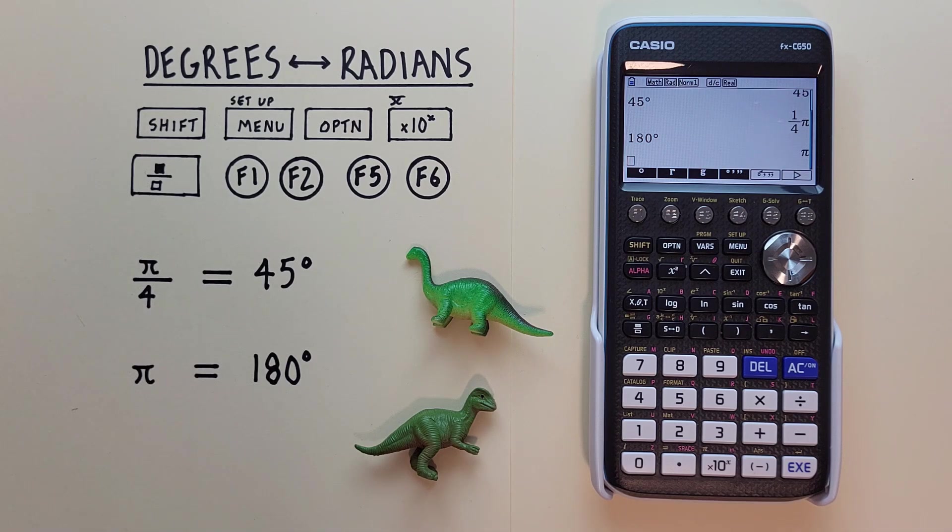What about going from pi to degrees? Again, the first step is changing our calculator to the mode we want our results in.